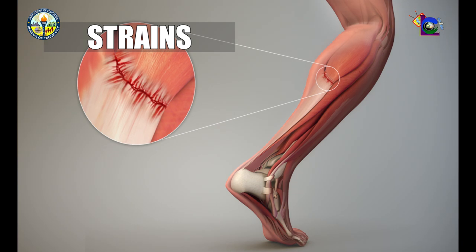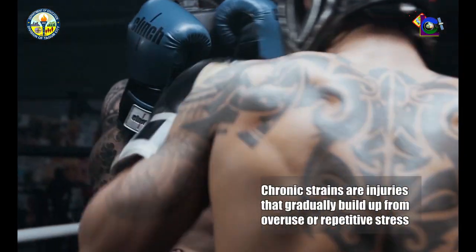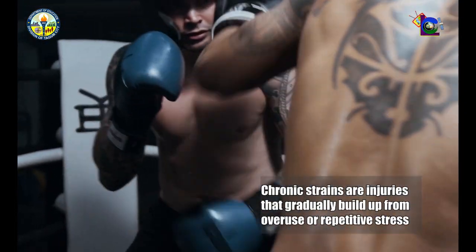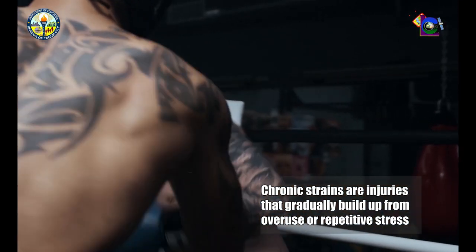Lastly is strains. Strains are injuries that involve the stretching, partial tearing, or complete tearing of a tendon. Chronic strains are injuries that gradually build up from overuse or repetitive stress.